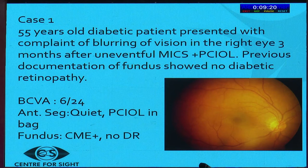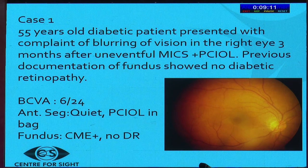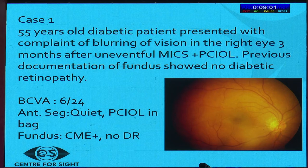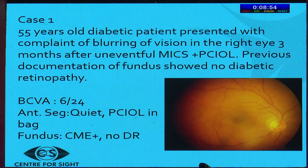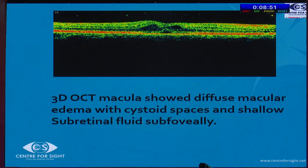Case 1: A 55-year-old diabetic patient presented with blurring of vision in the right eye about three months after uneventful MICS plus PCIOL. Pre-operative fundus documentation had not shown any diabetic retinopathy. Best corrected visual acuity had dropped to 6/24. The anterior segment was quiet, PCIOL was in the bag, and the fundus showed CME with no diabetic retinopathy. OCT picture showed subfoveal fluid with cystoid spaces.